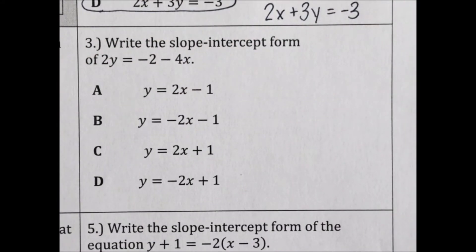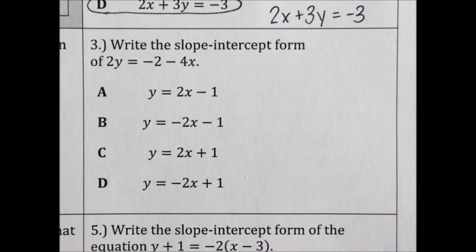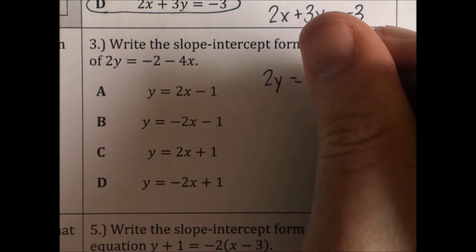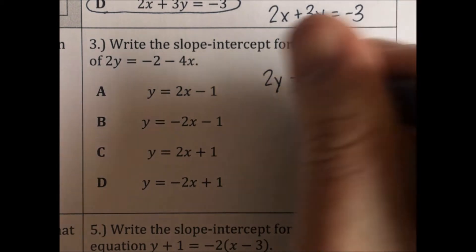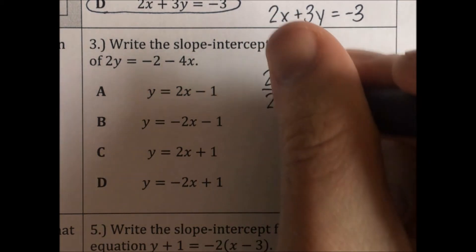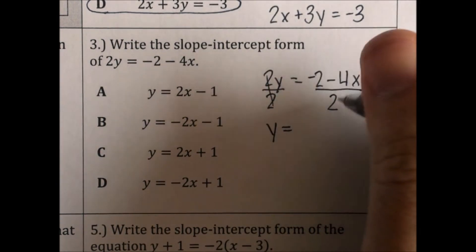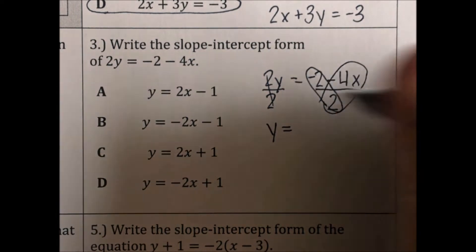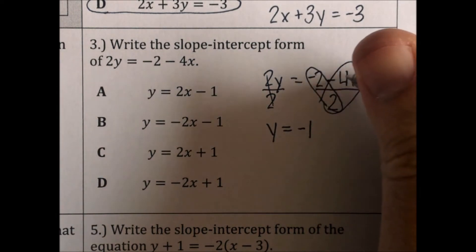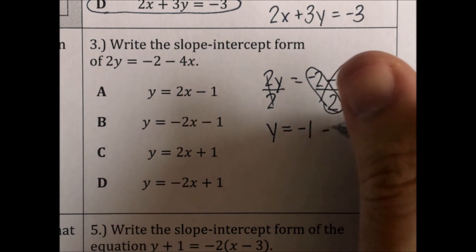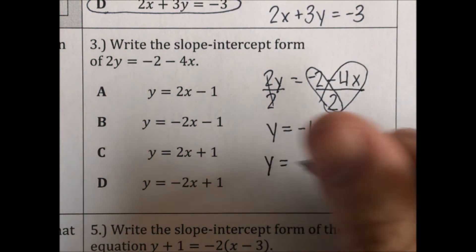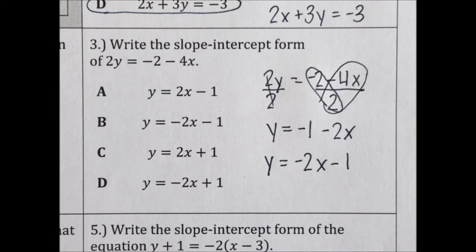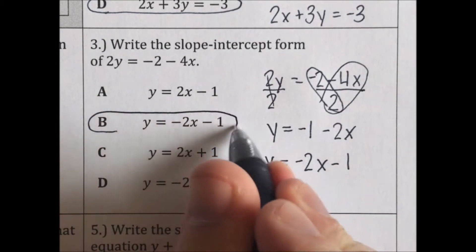Write the slope-intercept form of 2y equals negative 2 minus 4x. Slope-intercept form — the y needs to be alone. So all we need to do is divide everything by 2. When we divide, we get y equals negative one (negative 2 divided by 2) and negative 2x (negative 4 divided by 2). We just need to switch the order so the x term is closer to the equal sign: y equals negative 2x minus 1. That's choice B.